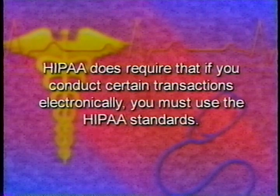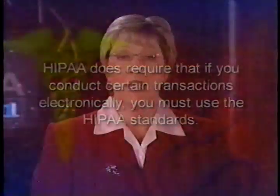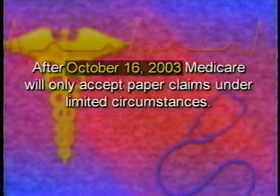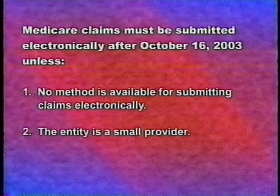Covered entities that filed for an extension are required to begin internal testing by April 16, 2003. HIPAA does not require that you submit health care claims electronically — what it requires is that if you conduct certain transactions electronically, you must use the HIPAA standards. ASCA also requires that most Medicare claims submitted after October 16, 2003 be submitted electronically, with exceptions. For example, you may continue to submit paper claims if there is no method available for submitting them electronically, or if you are a small provider, regardless of whether an electronic format is available.